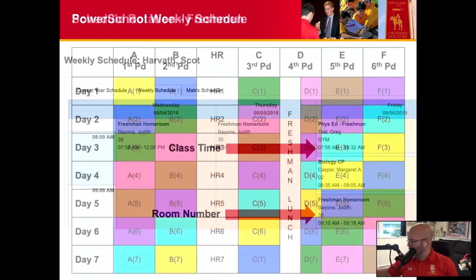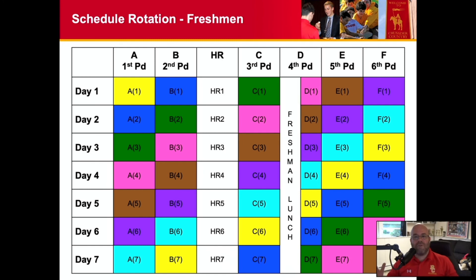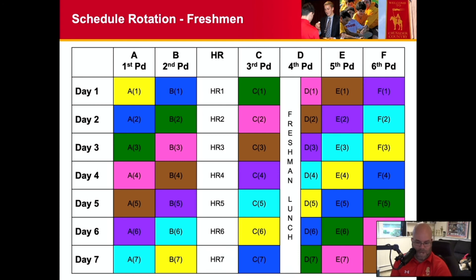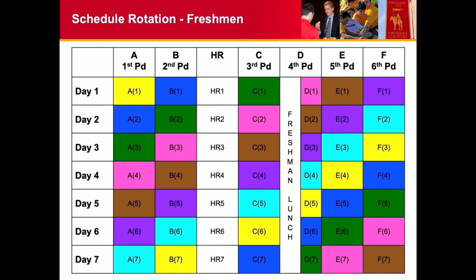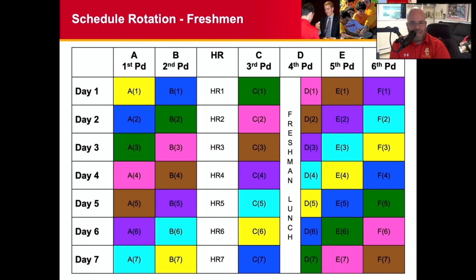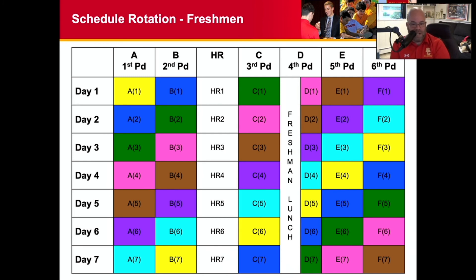What we have at Bergen is a rotating schedule. Your classes will never meet at the same time two days in a row, unless we're running some kind of special schedule. Every day you have six classes out of your seven — one class will always drop. So if you're looking at day one, you would take your first six periods. Your last period drops and then comes in on day two, period six.